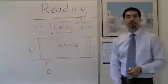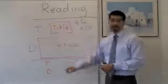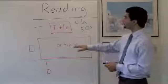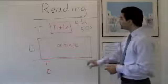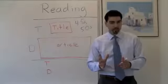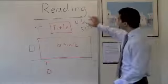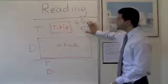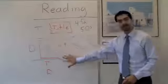This is what you're going to see on the computer screen. You're going to see a title, and you're also going to see an article. Now this article is basically just one paragraph and it's going to be made of about a hundred words. So again, the computer is going to give you 45 or 50 seconds to read this and understand it.